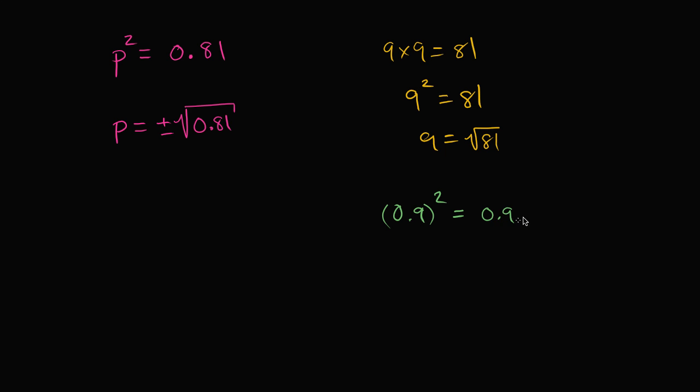0.9 squared, well, that's going to be 0.9 times 0.9, which is going to be equal to—well, 9 times 9 is 81. And I have one, two numbers to the right of the decimal. So I'm going to have two numbers to the right of the decimal in the product. So one, two. So that indeed is equal to 0.81.